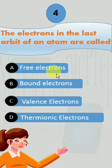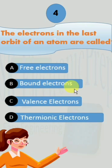Free electrons are those that are not bound to an atom's nucleus and are thus free to move in response to an external energy source. Bound electrons are bounded by the strong attracting force of the nucleus.